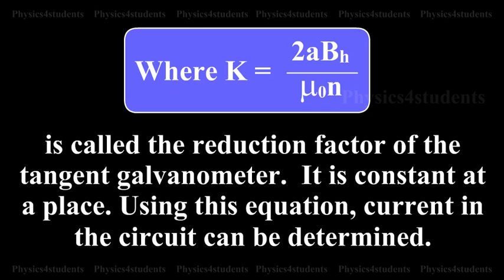When K equals 2A BH by mu naught N is called the reduction factor of the tangent galvanometer. It is constant at a place. Using this equation, current in the circuit can be determined.